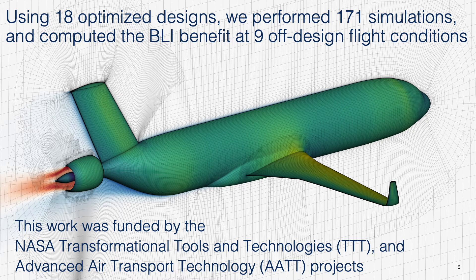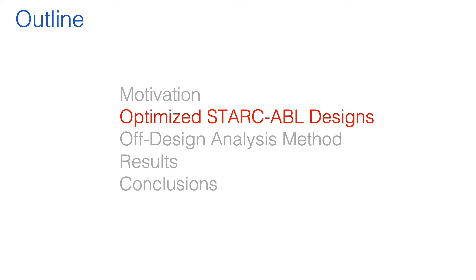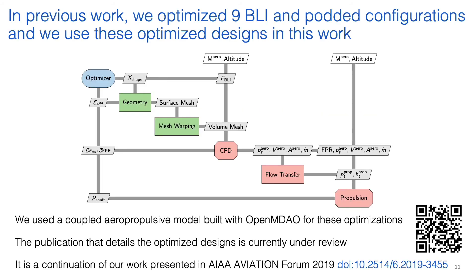In previous work, we optimized both the BLI and podded configuration designs at nine different design points for a total of 18 optimized designs. We used a coupled aeropropulsive model built with the OpenMDAO framework to optimize the BLI and podded fan designs. The publication detailing this work is currently under review, but it is a continuation of our previous work presented at the AIAA Aviation Forum in 2019. This work was funded by the NASA T-Cubed and AATT projects.